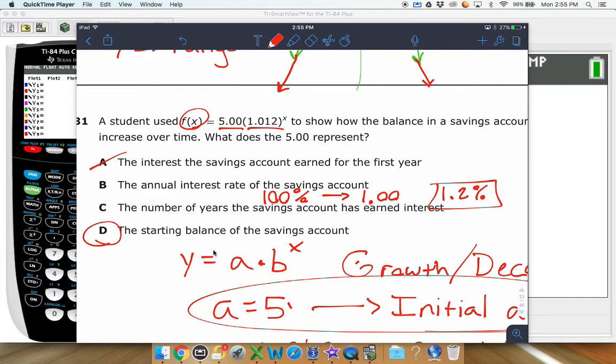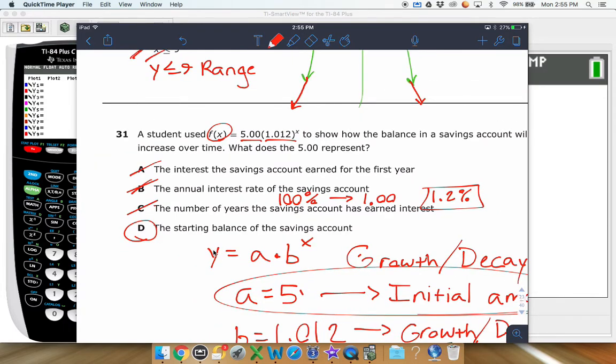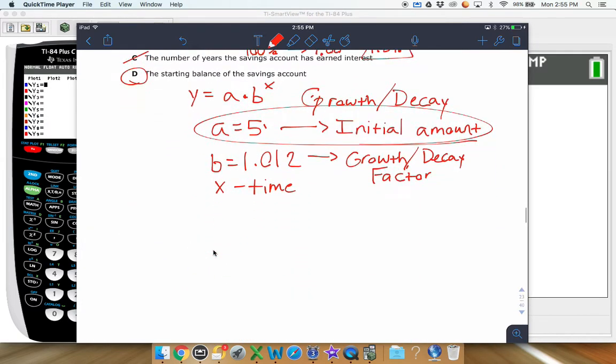Okay, but anyways, regardless, it's not that answer right there. And then C is the number of years of savings account, the number of years the savings account has earned interest right there. And that would have to deal with like x right there. That's dealing with the time. So obviously not C. So D is your best option.